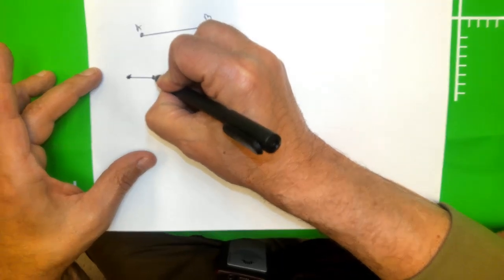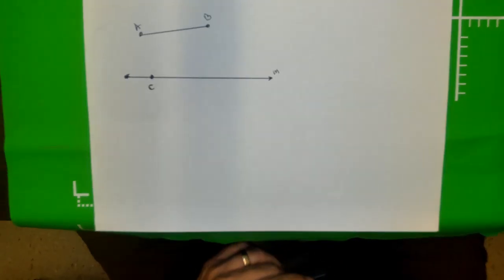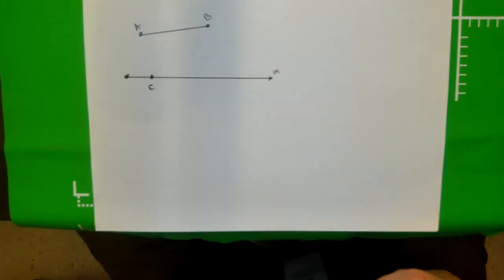And now on this line mark a point. Let's say we mark this point C - that will be my first point for the segment that will be congruent to AB.